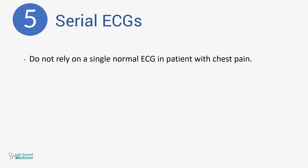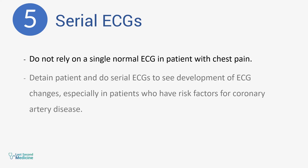Number five: serial ECGs. In patients with chest pain presenting shortly after onset of symptoms, do not rely on a single normal ECG. Detain the patient for some time and do serial ECGs to observe the development of ECG changes, if any — particularly in patients who have risk factors for coronary artery disease.